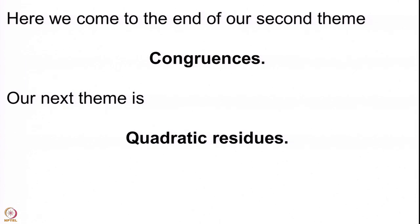This brings us to the end of our second theme. Our first theme was on primes — unique factorization and basic properties. Our second theme is congruences: we defined congruences, looked at the ring Z/nZ, and tried to understand it as much as possible — not just the addition but also the product — and we have just now completed the understanding of all units in these rings.